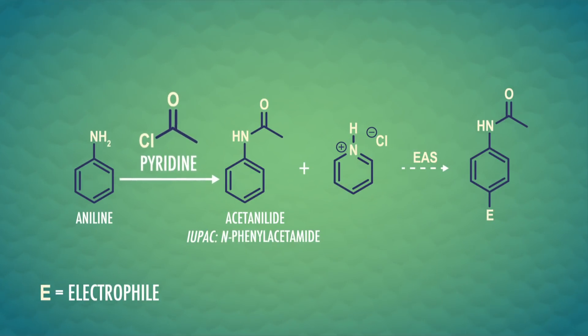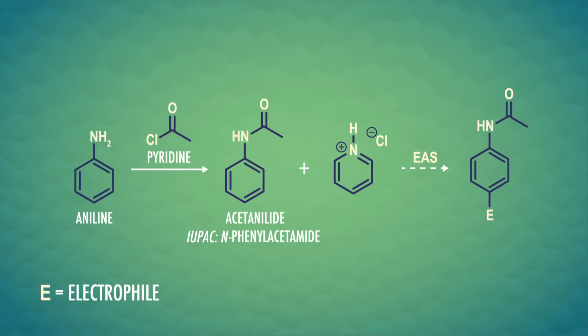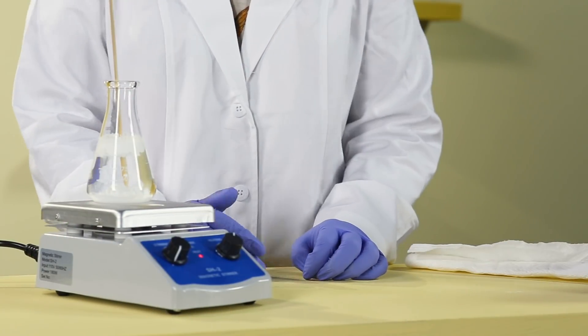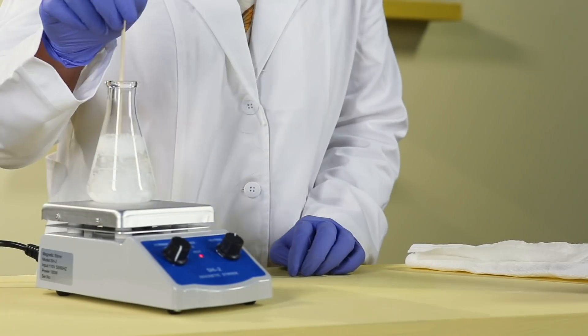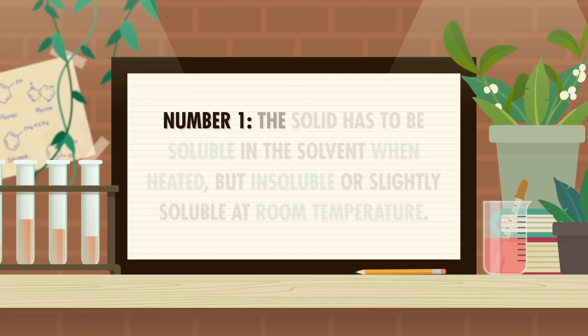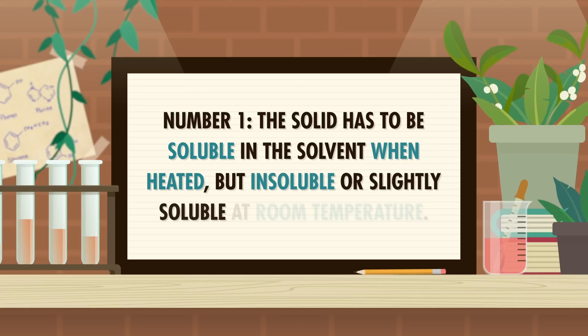Let's go back to our aniline reaction with our now-purified acetyl chloride. We can use an amide-forming reaction to turn aniline into acetanilide, and once we've done this, we'll need to purify our new product. Acetanilide, like many aromatic compounds, is a crystalline solid. To purify this, we need a method based on solubility called recrystallization. This involves heating up a mixture of compounds in a solvent until they all dissolve, and having one selectively crystallize back out. The recrystallization solvent has to meet two criteria: the solid has to be soluble in the solvent when heated, but insoluble or slightly soluble at room temperature.